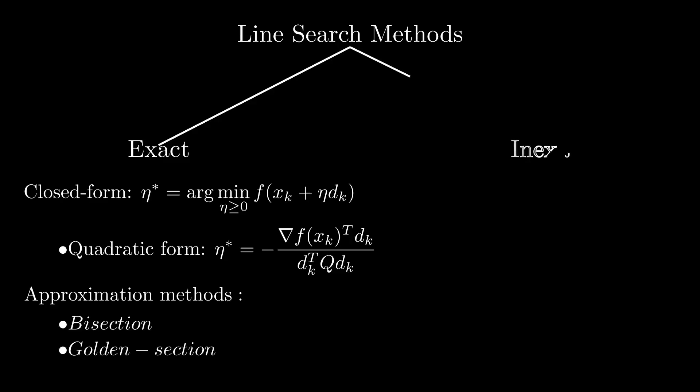Instead of finding the exact step size that minimizes the function, we accept a step size that satisfies certain conditions. So we're basically saying that we accept a step size that is good enough and ensures convergence.